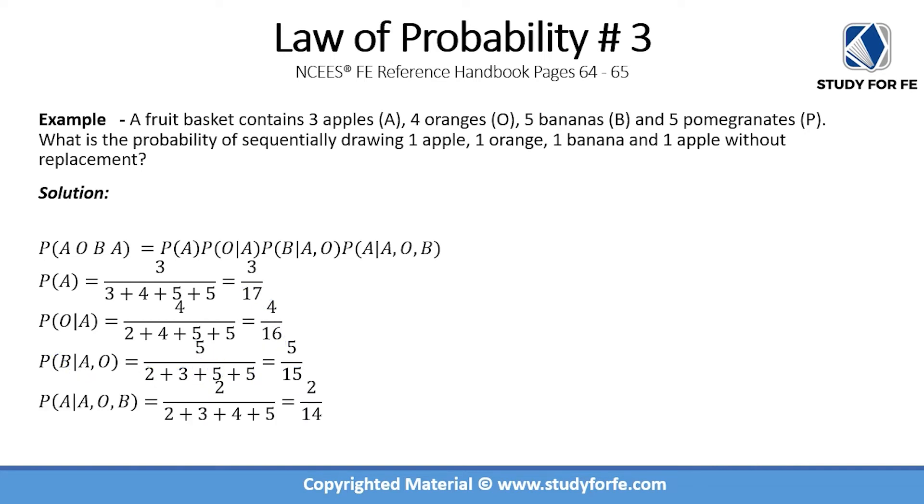Now the probability of removing the final apple given that one apple, one orange, and one banana have been removed is simply 2 divided by 14. This is the new number of apples in the basket, three oranges, four bananas, and five pomegranates. What you will do is substitute 3/17, 4/16, 5/15, and 2/14 into the formula.